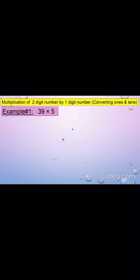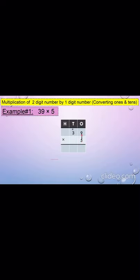Now we will discuss the multiplication of a two-digit number by a one-digit number, in which we will study the conversion of ones and tens. Here we have an example: 39 multiplied by 5. We put the numbers in the place value chart. 39 has 3 tens and 9 ones, and 5 comes in the ones column. Let's begin the multiplication. Step 1: we will multiply 5 and 9. 5 multiplied by 9 equals to 45, and 45 equals to 4 tens and 5 ones. So 5 will come in the ones column and 4 will go carry to the tens column.